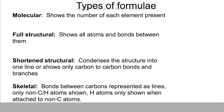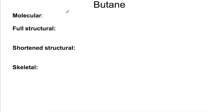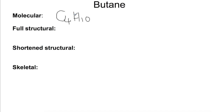Let's have a look at an example to show each of these being used, looking at butane. Butane has a molecular formula of C4H10, so this just tells us what atoms are present and how many there are. It doesn't give us any information about how those atoms are joined together — it purely tells you what's there.